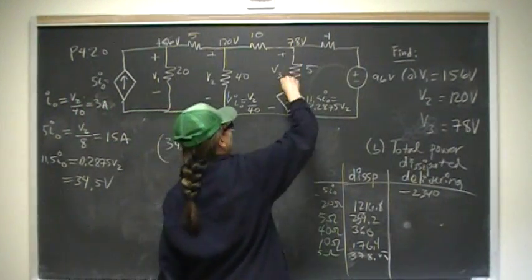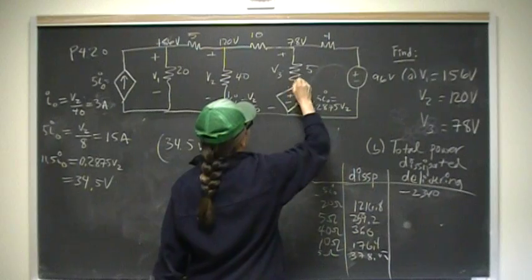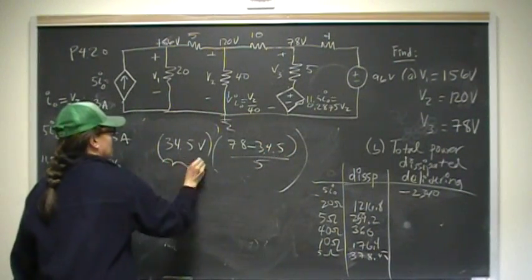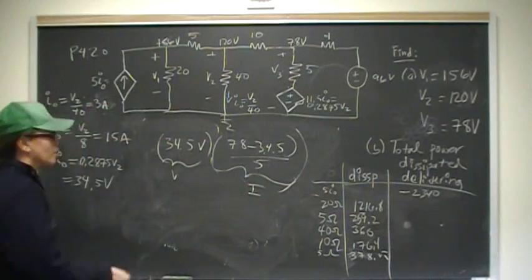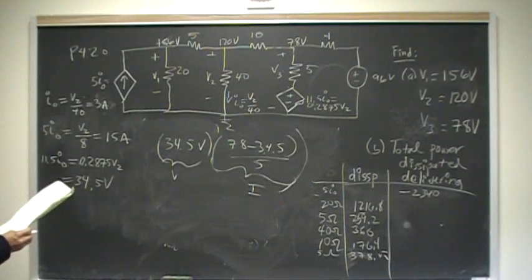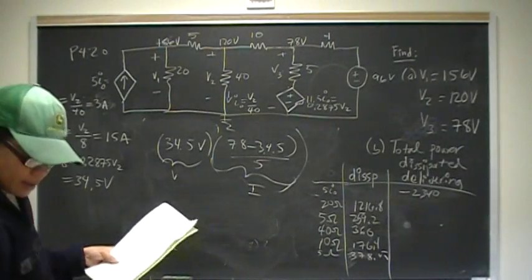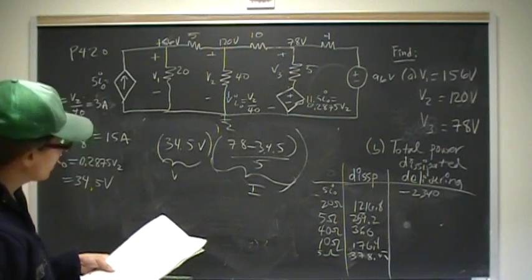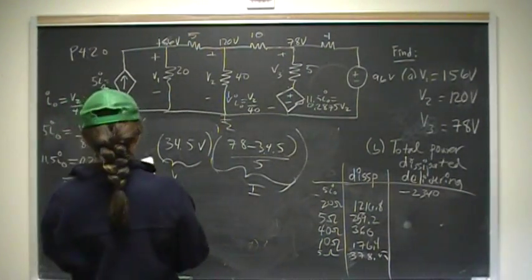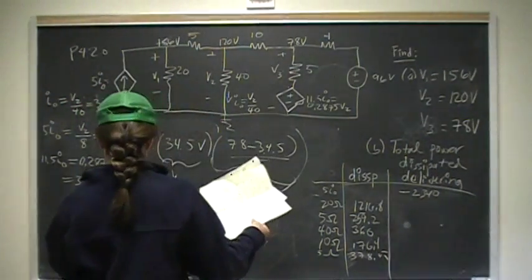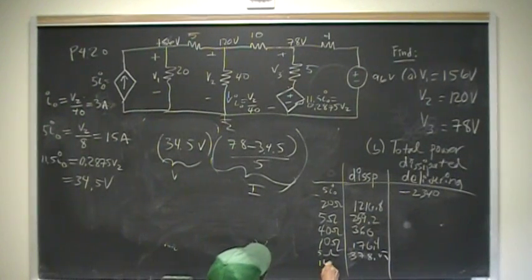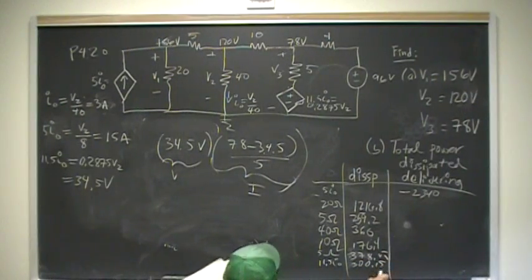For the dependent voltage source 11.5I₀, the voltage is 34.5 volts and the current through it is (78 minus 34.5) over 5. So P = 34.5 times (78 minus 34.5) over 5 = 300.15 watts dissipated by that element.